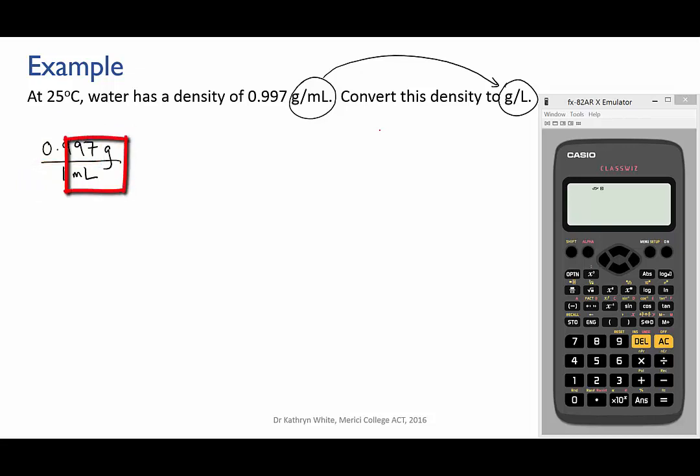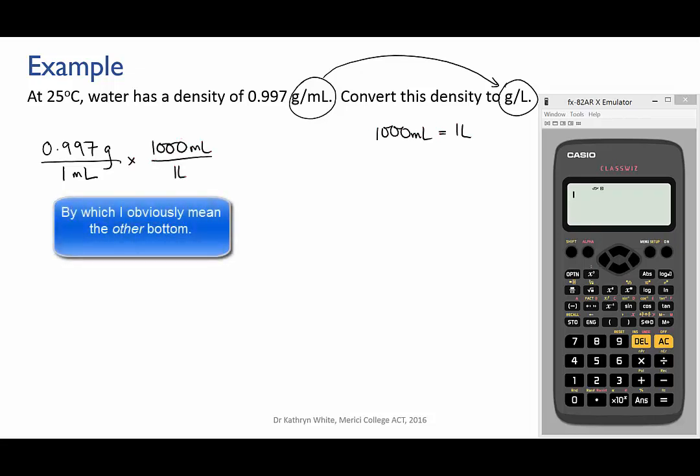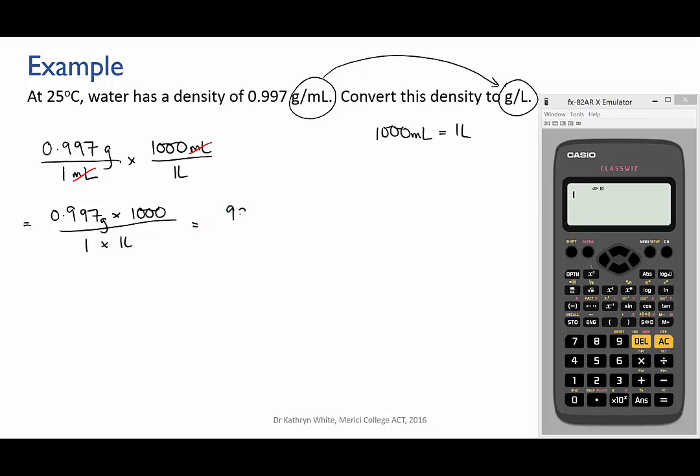Now we don't need to change the grams, we just want to change the denominator from mils to liters. So what we need is the conversion factor from mils to liters. Now we know that 1,000 milliliters is equivalent to 1 liter and we want to cancel out the milliliters so they're going to go on the bottom. And now we cancel our units and we complete the calculation and we get that the density is 997 grams per liter.